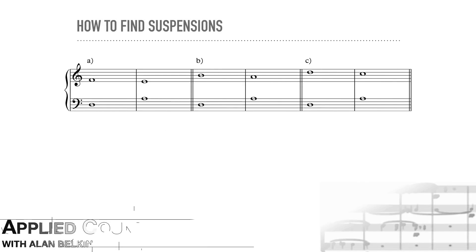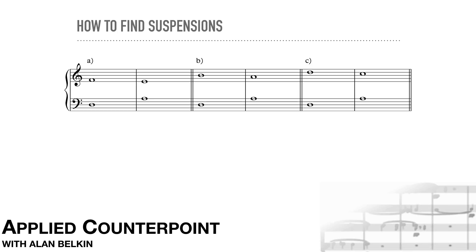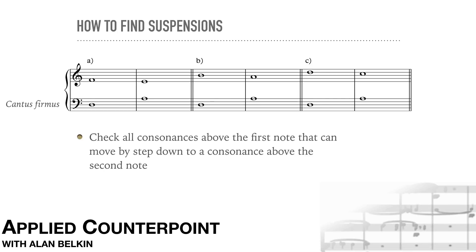The cantus is in the lower part here, and we're looking for possible suspensions above it. Examples A, B, and C are the three possible ways to harmonize the given note D-A with descending seconds. A doesn't create a dissonance at all, since F held over will be a sixth resolving to a fifth. B would create a 9-8 suspension, and C would create a 4-3 suspension. Therefore C is the richest of the three solutions. Fourth species is really about exploring possibilities for suspensions. When we move on to more complex textures, this will guarantee that you don't overlook them.